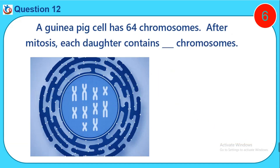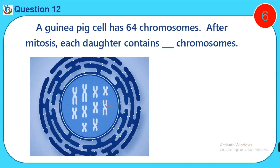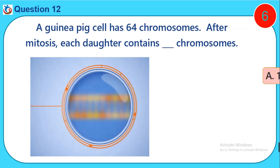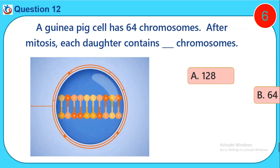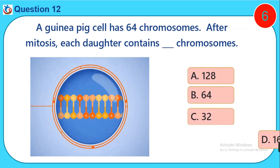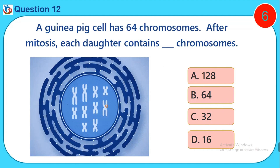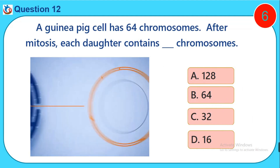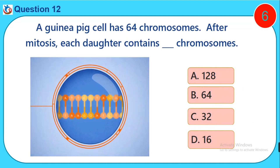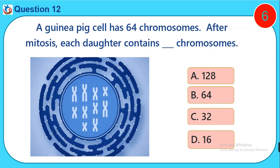Question twelve: A guinea pig cell has 64 chromosomes. After mitosis, each daughter cell contains dash chromosomes. A) 128, B) 64, C) 32, D) 16.